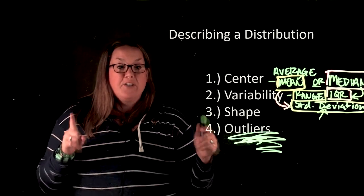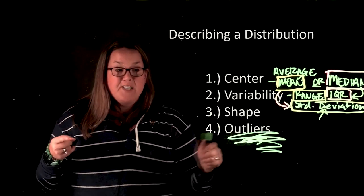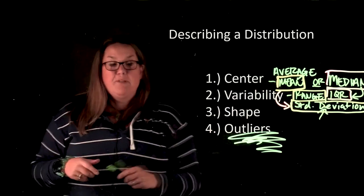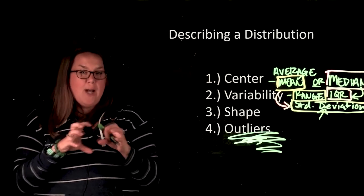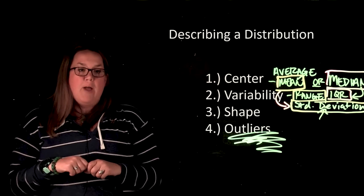So in the presence of outliers, measurements that are robust would be the median and subsequently IQR, because they're not dragged or pulled out by those outliers.